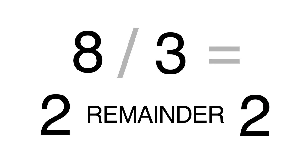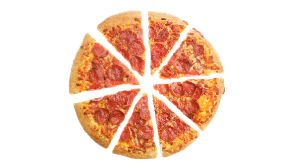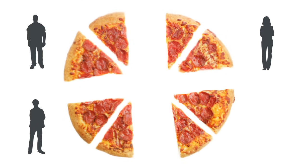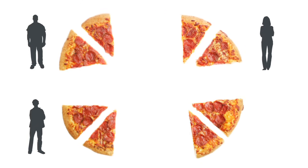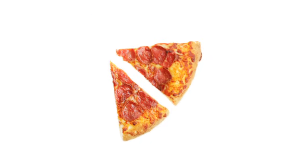Sometimes you can't divide numbers up equally. In that case, there will be something left over. This leftover number is called the remainder. If you tried to divide the eight slices between three people, each person would get two slices, and two would be left over. These two slices are the remainder.